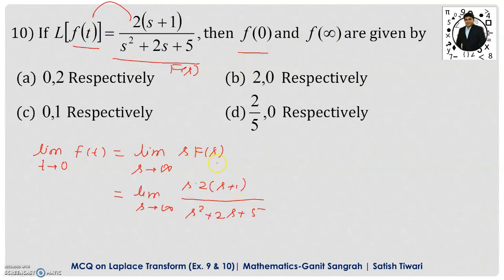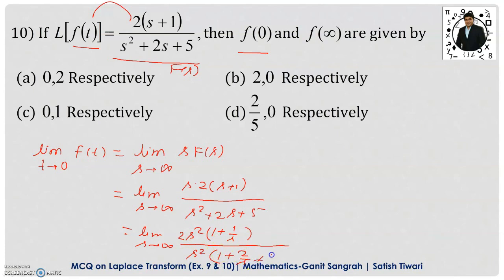Writing F(s) in the formula, to find the limit we take out the common s from the numerator: we get s² · 2 · (1 + 1/s). Taking s² common from the denominator gives (1 + 2/s + 5/s²). The s² cancels. Putting s = ∞, terms 1/∞ = 0, so we are left with 2 in the numerator and 1 in the denominator, giving the answer 2, which is f(0).